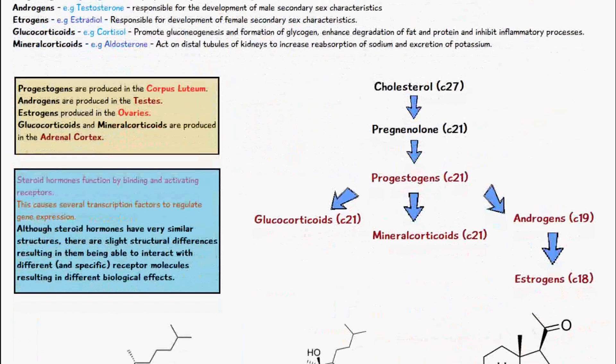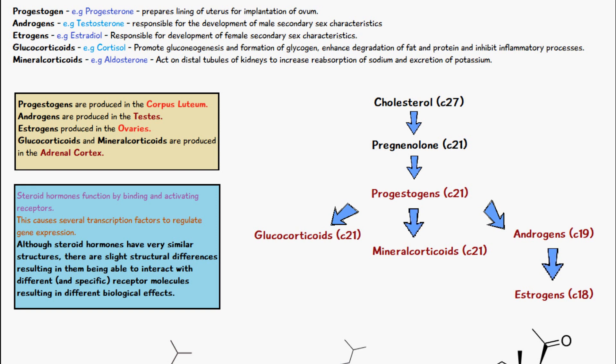Steroid hormones function by binding and activating certain receptors, which causes several transcription factors to regulate certain gene expression. The structural differences between all of these steroid hormones are very similar, with the exception of some very slight differences, but these key differences are the main reasons they all have a different biological effect.